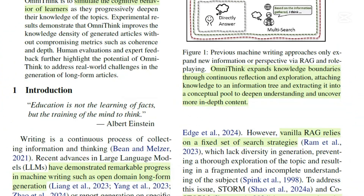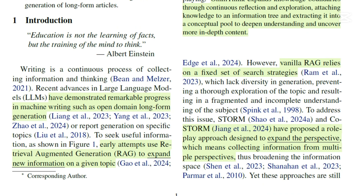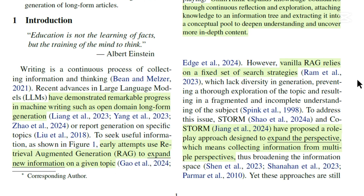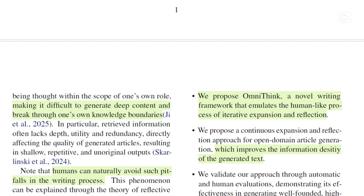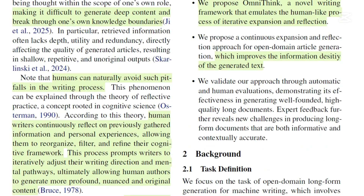Going back to why this approach was necessary: early attempts using RAG, or retrieval augmented generation, to expand knowledge on a given topic relied only on a set of search strategies, which is very limited. Vanilla RAG is not able to expand to longer context when asked to write an essay or a long article, making it difficult to generate deep content and break through one's own knowledge boundaries.